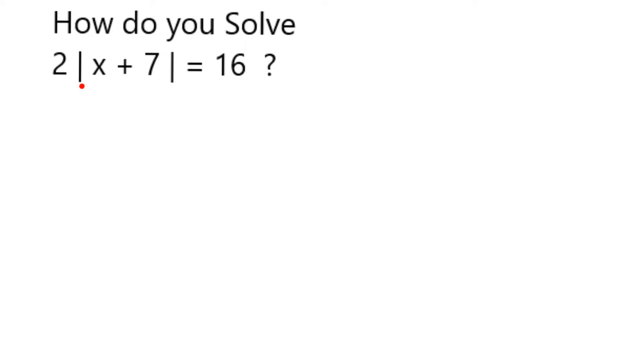To solve this, I first want to get the absolute value part of this expression by itself. So I'm going to divide everything by 2. On the left side, the 2s cancel, and on the right side, 16 divided by 2 is 8.